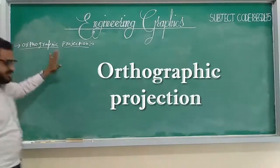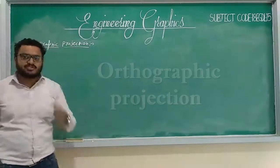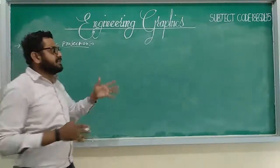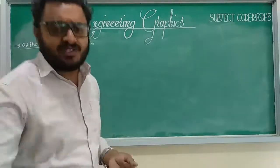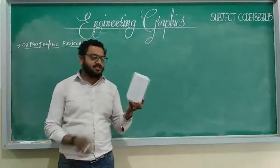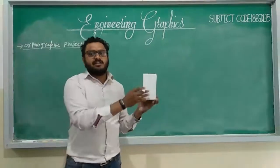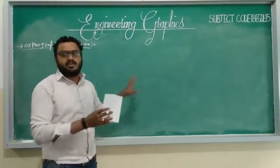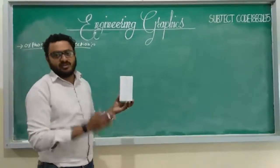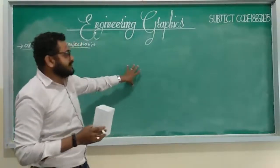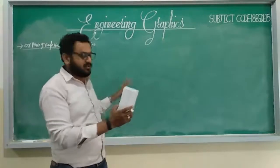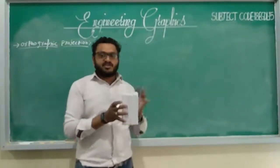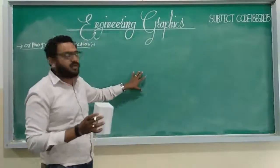Orthographic projection means representing three-dimensional objects on a two-dimensional paper or drawing sheet by using different views. If we take a three-dimensional object having length, breadth, and height, and we want to draw it on a 2D paper, all information should be captured. We do this by seeing the object in different views — front view, side view, and top view — and drawing the image with all dimensions. This process is known as orthographic projection.